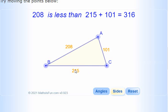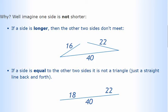Notice that 101 plus 215 is more than 208. Notice that 208 plus 215 is more than 101. And notice that 208 plus 101 is more than 215. So the sum of any two sides has to be more.